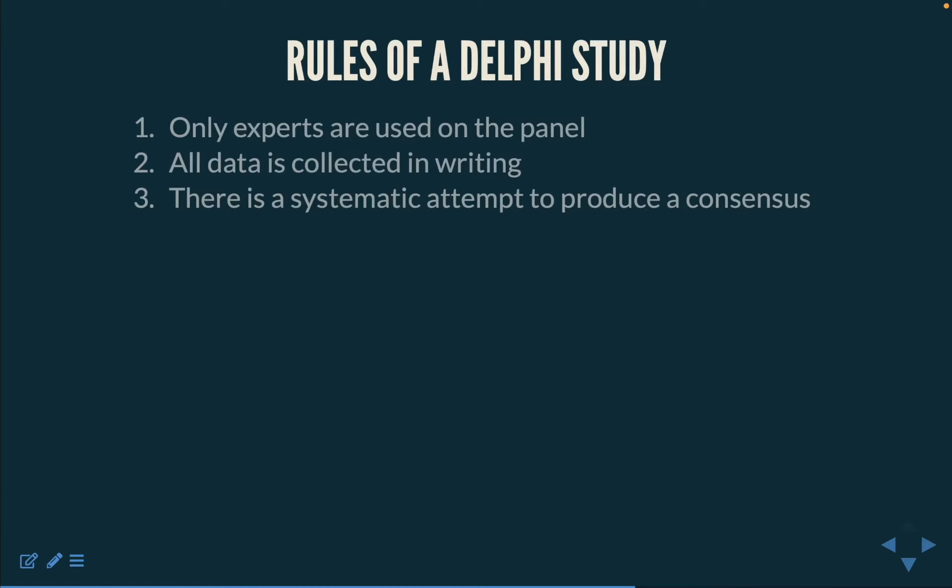Step 13: Only experts are used on the panel. The whole point of engaging in a Delphi study is to make the most of expert opinion. It is therefore counterintuitive to invite anyone onto the panel who is not an expert. It may be tempting to make up the numbers by involving someone who has some knowledge of the subject but is not truly an expert. It is better to have fewer members but retain the expert integrity of the panel.